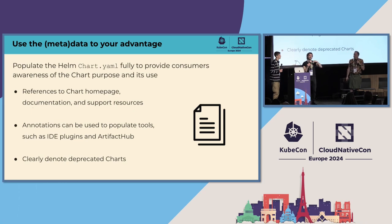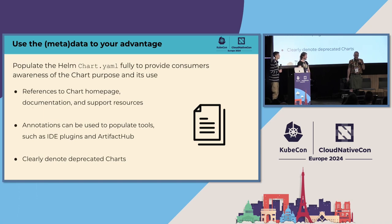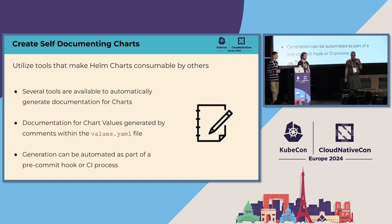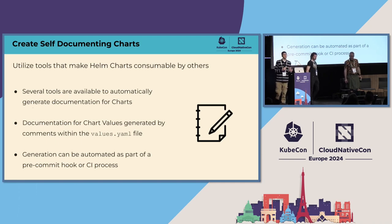If you look on artifacthub.io, there's a list of annotations — what Joe is talking about is just a key-value pair like 'source' — and people will love you for it. I post charts publicly and occasionally someone finds one and sends me a pull request. You can also clearly denote which charts are deprecated, so people can still find and use them but know it's end-of-life.